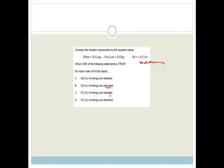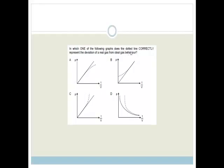It says, consider the reaction represented in the equation 2Fe plus 3CO2 goes to Fe2O3 plus 3CO, and then delta H is 53.2 kJ. Now, it says, which one of the following statements is true for each mole of Fe that reacts? This much energy, 26.6 kJ of energy is released. Or it's absorbed, or 53.2 and 53.2. Right, so delta H is endothermic, which means what? It means we take in energy. So, energy is absorbed. We also know this 53.2 is for 2 Fe moles. So do you agree that for 1 Fe mole we've got 26.6? So, therefore we can say that, well, the energy is absorbed, and it is 26.6 kJ of energy is being absorbed.